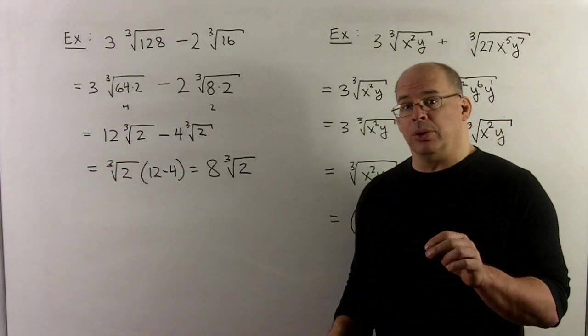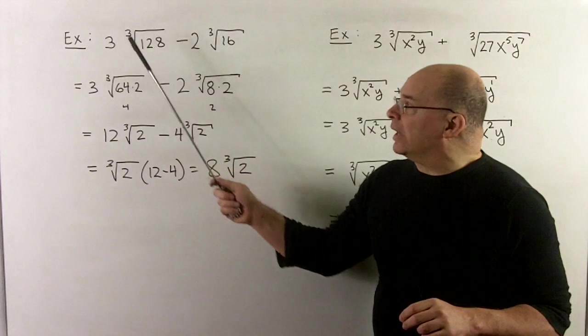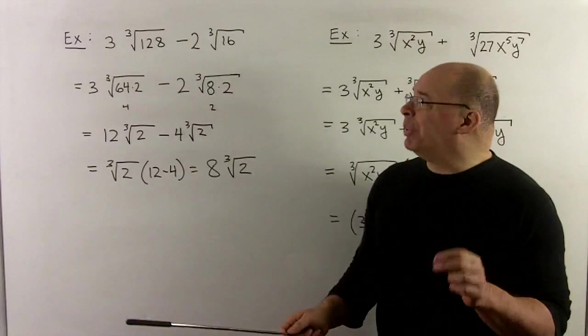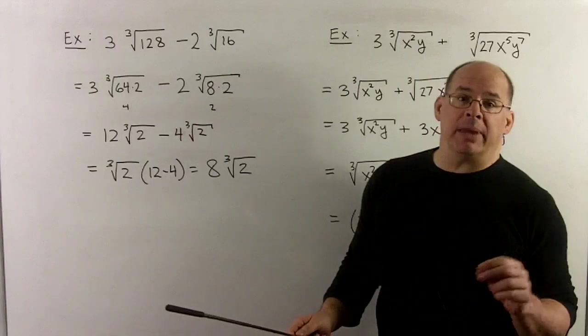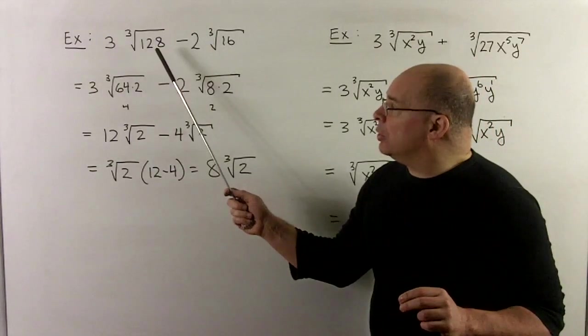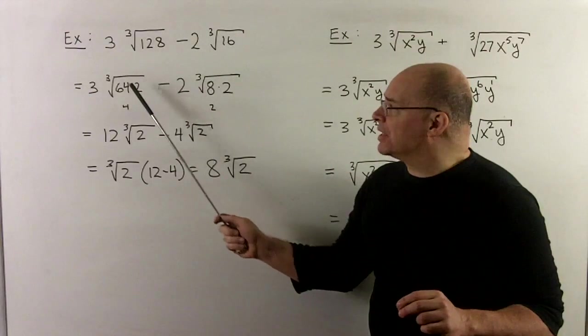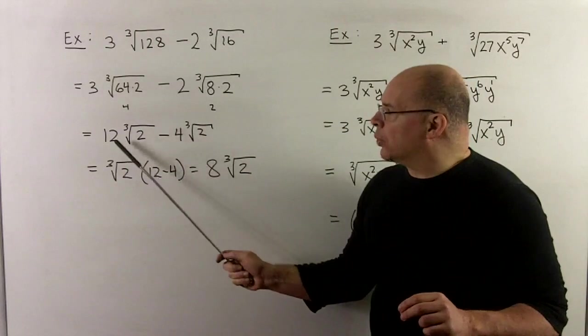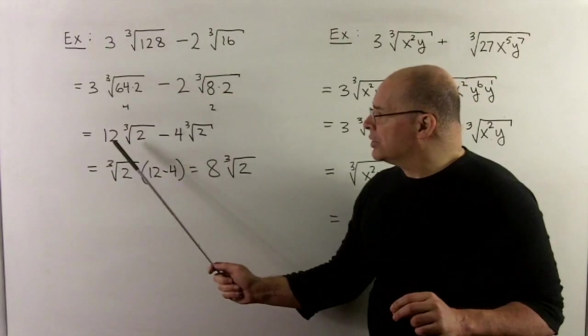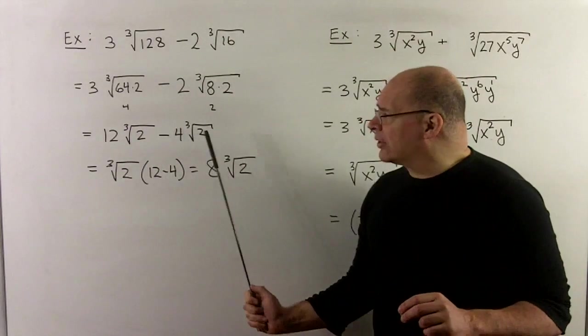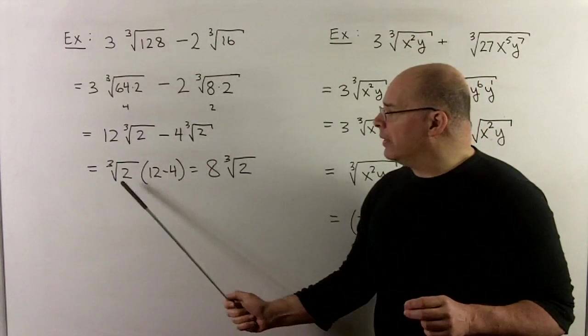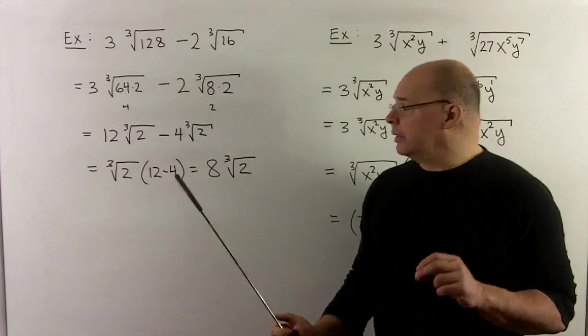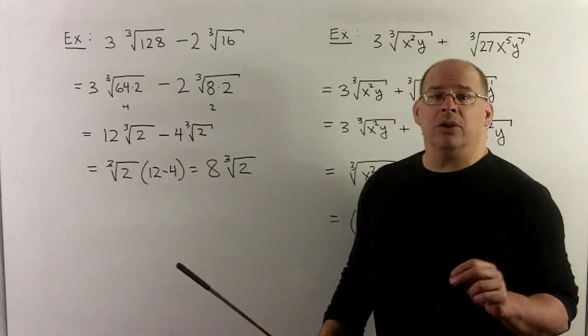Let's look at some examples with cube roots. Consider 3∛128 minus 2∛16. Here, the radicals don't match, but our expressions aren't simplified, so we may be able to do more work. If we look for the biggest cubes under each radical, so 128 I find 64, in 16 we find an 8. The 64 goes to a 4 for a 12, and then the 8 goes to a 2 for a 4. So, we note here, we have a common factor of ∛2, so we'll pull that out, leaving us with 12 minus 4. Two terms go to two terms. We combine, and then we have our answer of 8∛2.